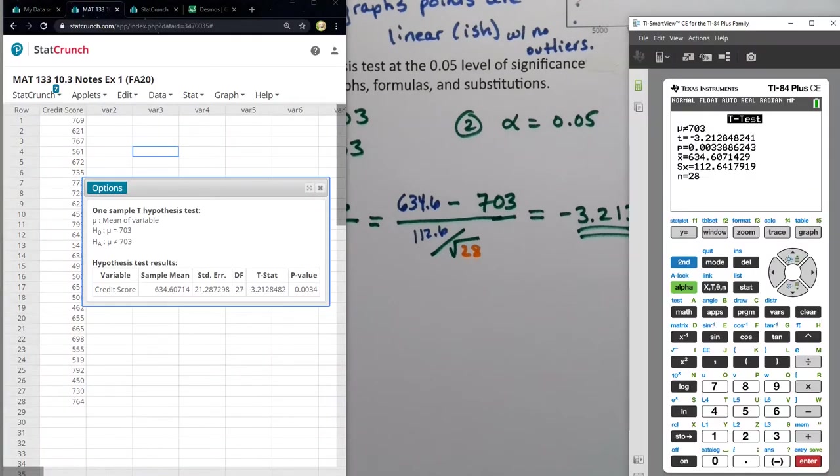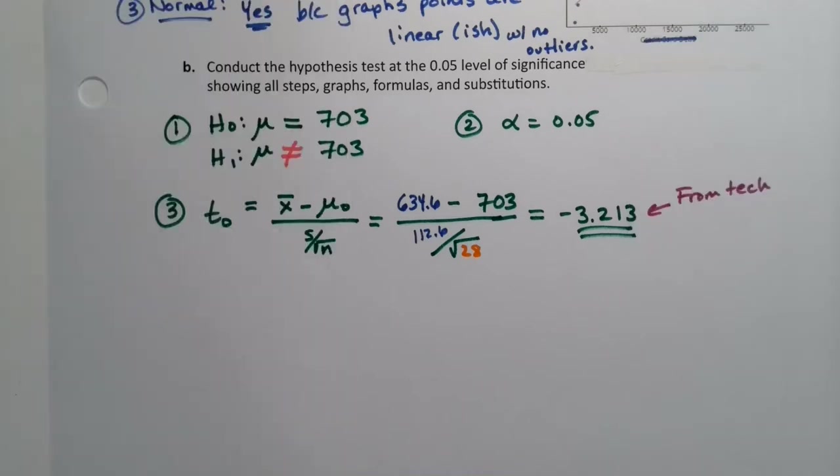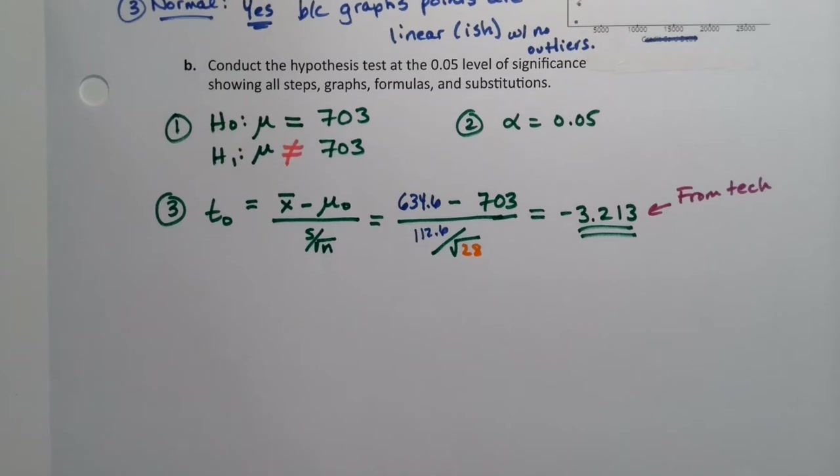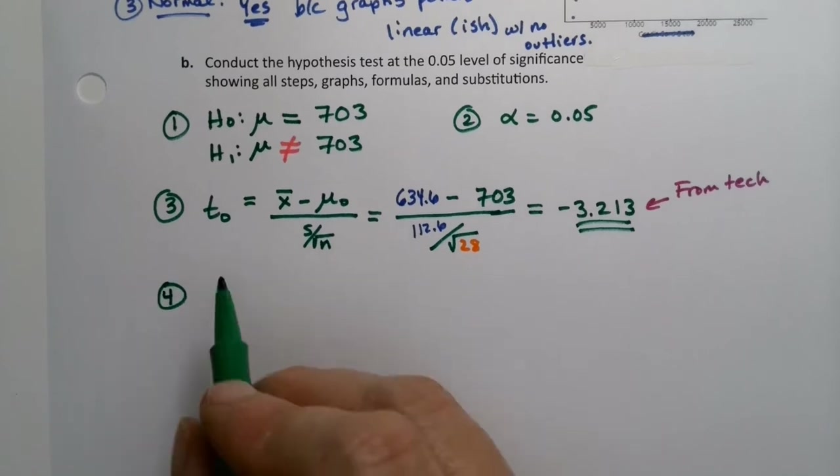Now what about the P value? Because we need that for the next piece. So in the calculator, it says P equals 0.00333886. So in other words, 0.034. And that's exactly what StatCrunch gives us. StatCrunch gives us 0.0034. So either way you want it, it's fine. Use either StatCrunch or the calculator. But you're going to get that P value of 0.0034.